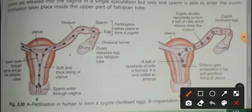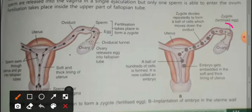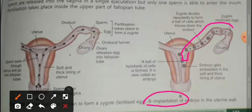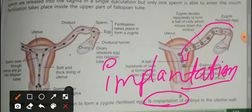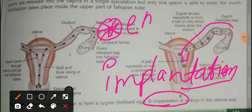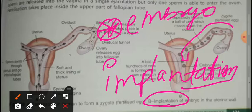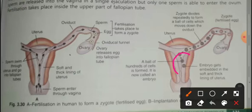After the egg is fertilized, it will move slowly from the fallopian tube toward the uterus, where it will be established for the next nine months. This process is called implantation. When the embryo — because the zygote is fertilized as a single cell — divides, it is then called an embryo. When the embryo gets settled in the uterine wall, this is called implantation.